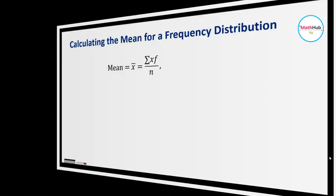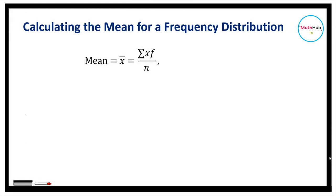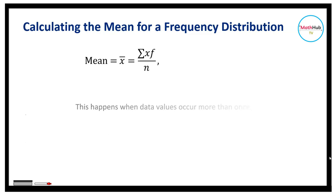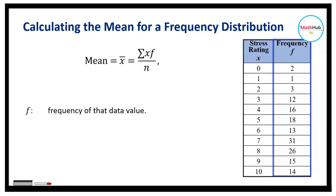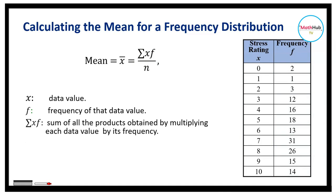If the data is organized using a frequency distribution, this is the formula we are going to use to compute the mean. This happens when data values occur more than once, and a table is used to organize the data. F represents the frequency of that data value, X is the data value, and the summation means you sum up the product of the data value and its frequency, then divide by N, where N represents the total frequency of the distribution.